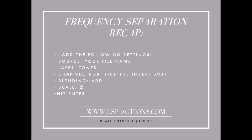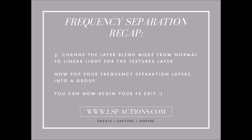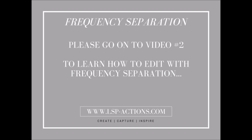Step three: select your textures layer and go to Image > Apply Image with the following settings — source is your original file name, layer is tones, channel is RGB (not CMYK), tick 'Invert,' set blending to 'Add,' set Scale to 2, and hit Enter. Step four: change the texture layer blend mode from Normal to Linear Light — you'll find this at the top of your layers palette. Pop your frequency separation layers into a group — that's your tones, textures, and blank layer — and you can now begin your frequency separation edit. Please scroll on to video two to see how to actually edit with frequency separation.